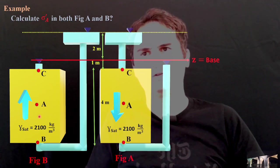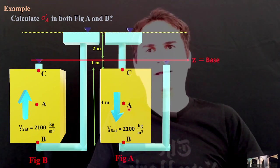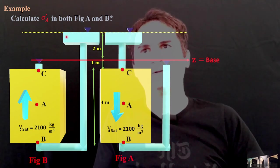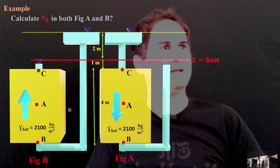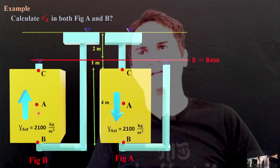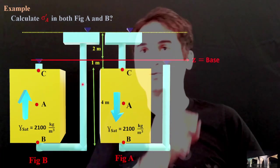We have a configuration of two sets of soil, figure A and figure B. Point A locates at the center of both soil samples. In one of the samples, we have downward seepage, and in figure B, we have upward seepage. We want to calculate the effective stress in both soils at their center. Let's see how we can approach this problem.